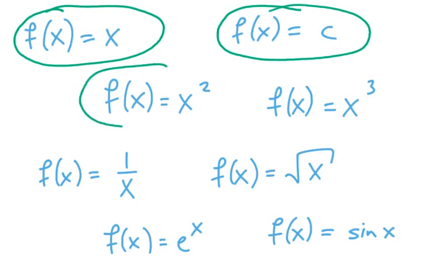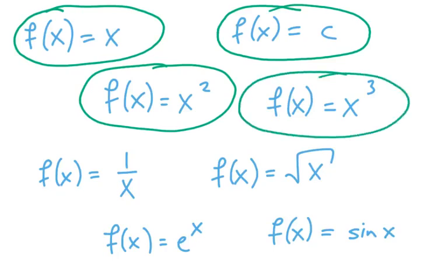This constant function is polynomial. This quadratic function is polynomial. Maybe you've seen before x cubed, that's a cubic function. So those first four are all polynomial.